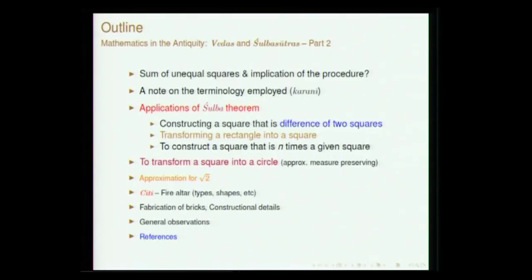In today's talk, we will start with the transformation of geometrical objects. For instance, suppose there are two squares: if you have to construct a square whose area will be the sum of these two squares, or you can think of two squares and find a square which will be the difference of these two squares, and if you have to construct a circle whose area is more or less the same as that of the square.